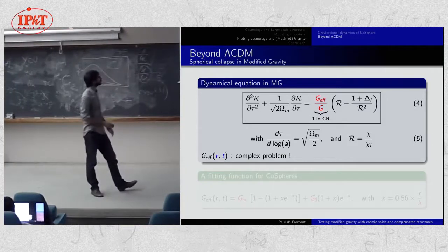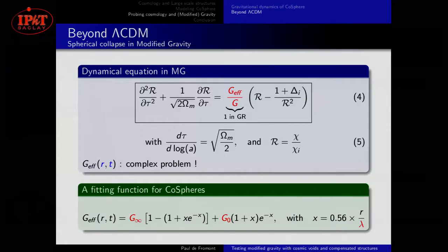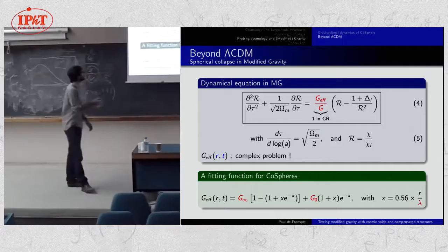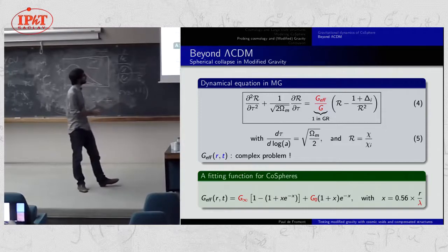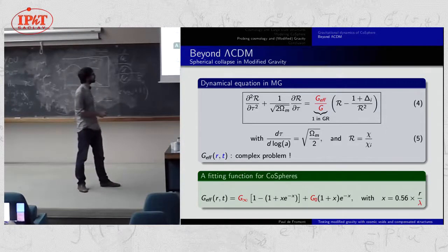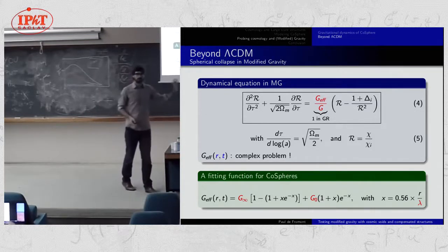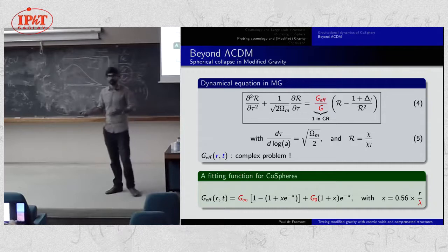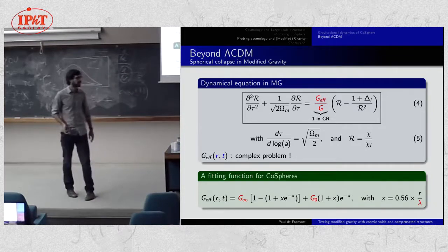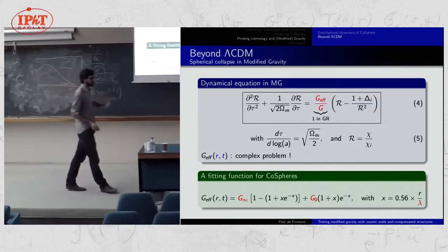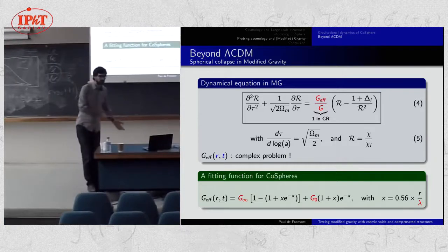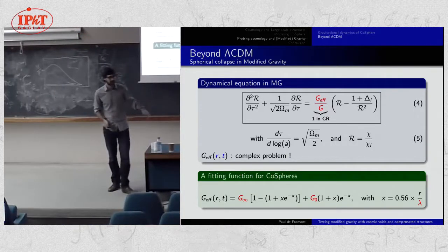However, something useful is that for CoSpheres — both cosmic voids and large-scale profiles around maxima — you can show that this effective constant reduces to a standard modified Yukawa function, which just involves r/λ (the Compton wavelength) and g₀ and g∞. This means you can now solve, almost analytically, the spherical collapse problem in spherical coordinates for any modified gravity theory in the quasi-static approximation.